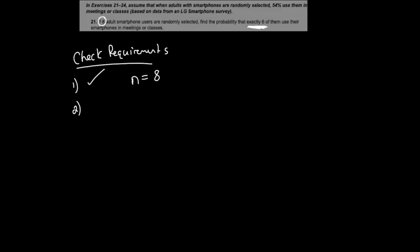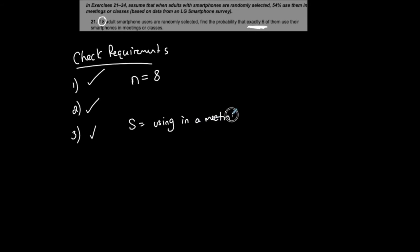Are the trials independent? If one person uses a smartphone in a meeting, it should not affect the probability of another person doing so. We'll assume they're independent. Two outcomes — success or failure. Success is defined as using the smartphone in a meeting or class; failure is not using it. Only two outcomes — correct.